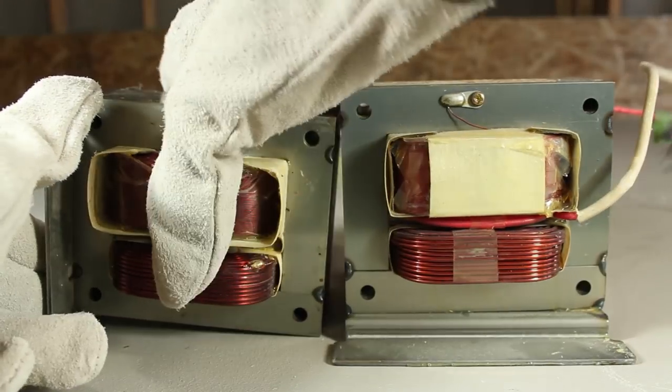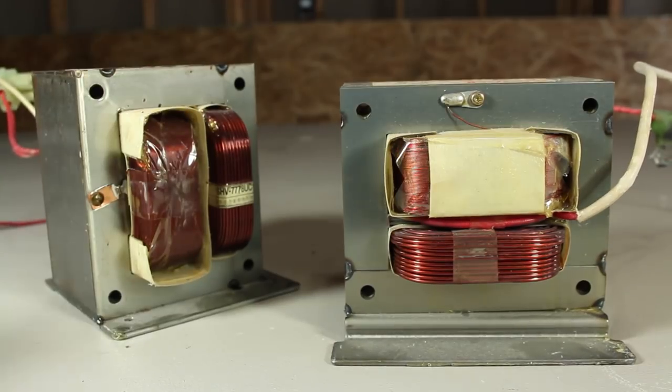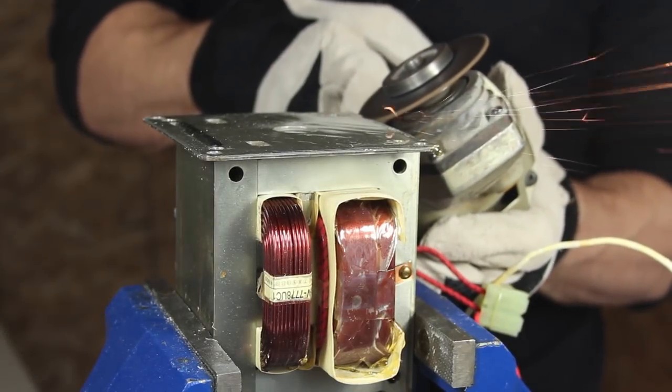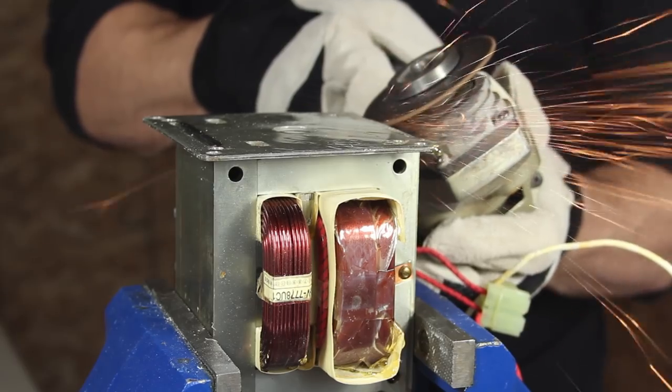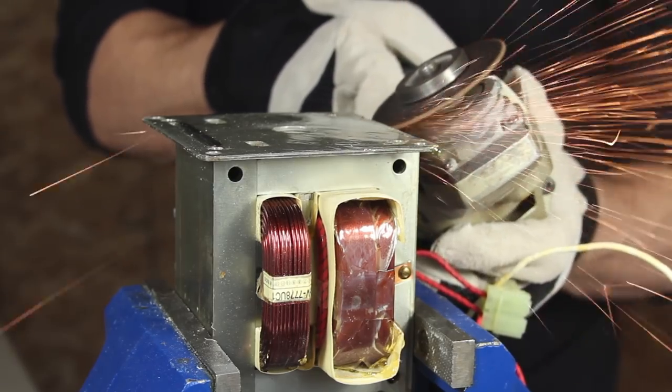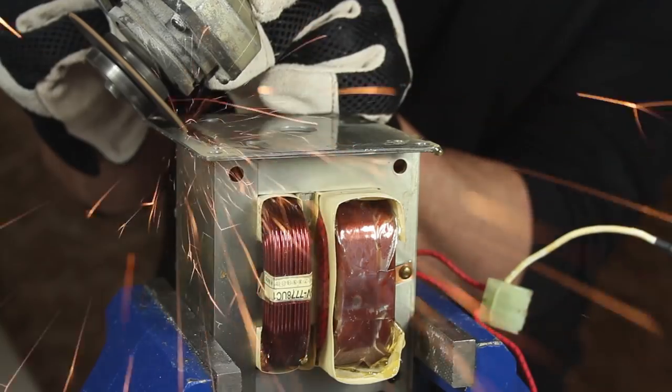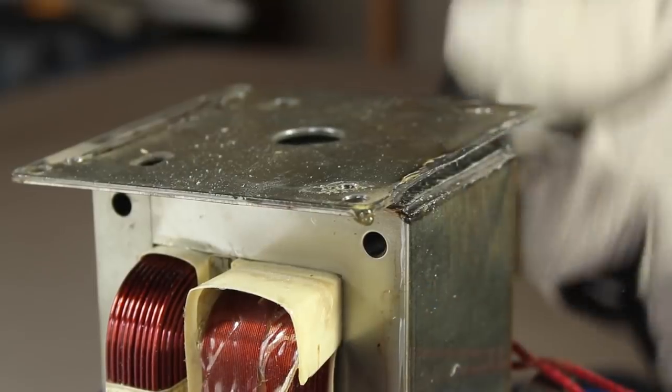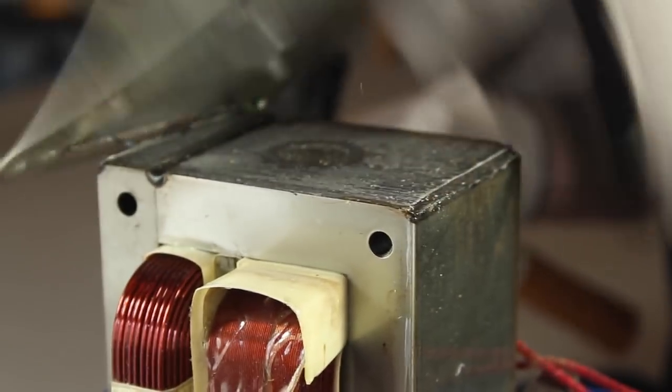These transformers are roughly the same size and look nearly identical, except for the placement of the bases. Using an angle grinder, we can cut down the seam of one of the shallow welds holding this base plate to the transformer. The other seam is a little trickier to get to, but once it's cut, the base plate can now be removed fairly easily.